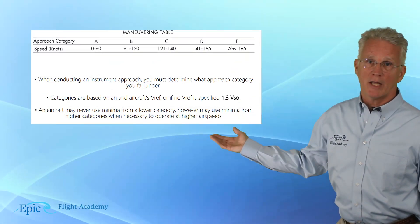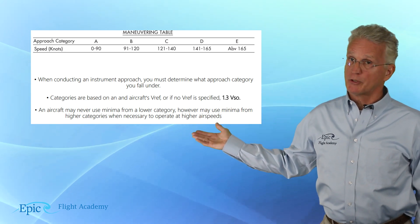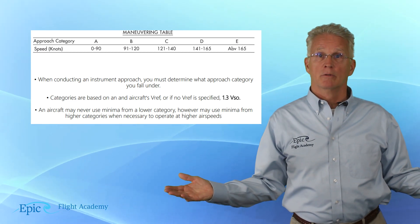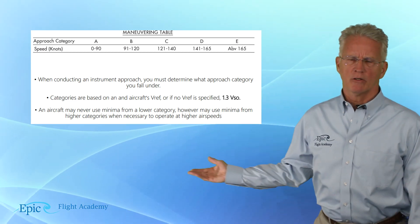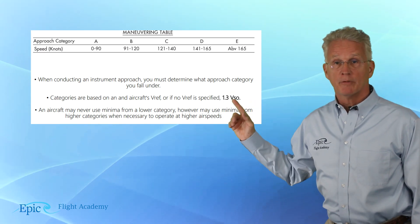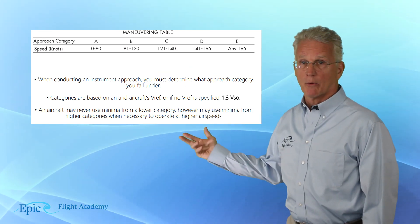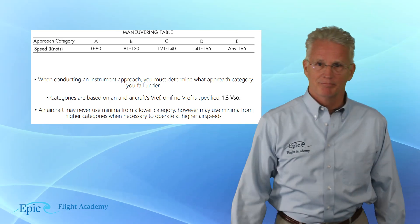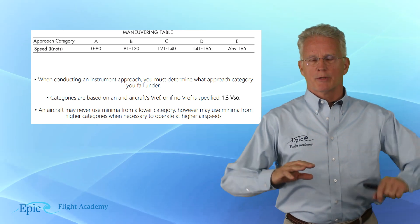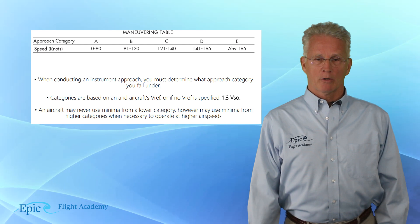So what this means is if I'm approaching the airport at 85 knots, I'm going to use category A minimums. If I know that my VREF or approach speed were, oh, maybe 115 knots, well, I wouldn't be using category A. And if I look at the table, I wouldn't be using category C. At 115 knots, what category would I use? And if you said category B, you nailed it.